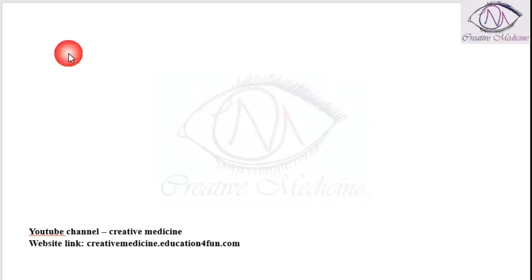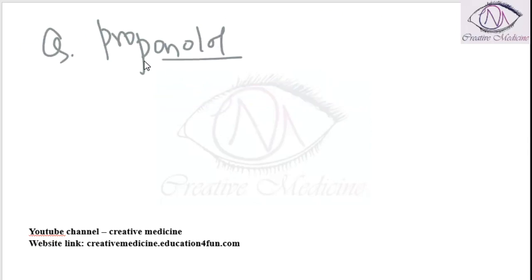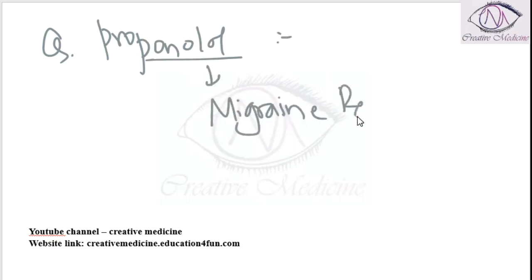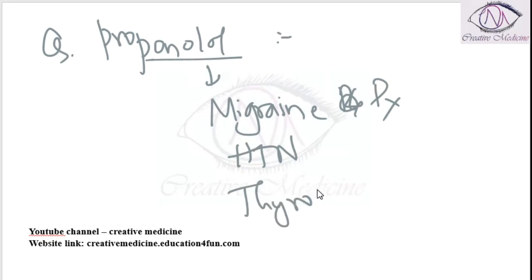Propranolol is used in — this is a PGIMER question — it is used in migraine prophylaxis, it is used in hypertension and thyrotoxicosis. It is not used in variant angina.